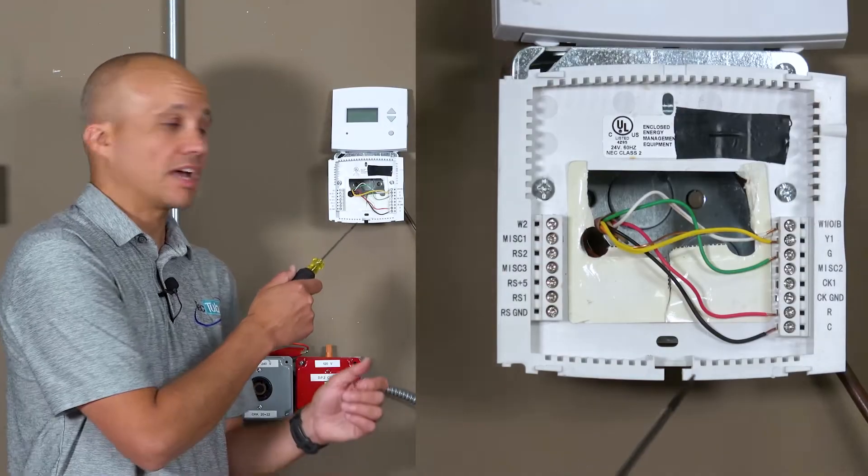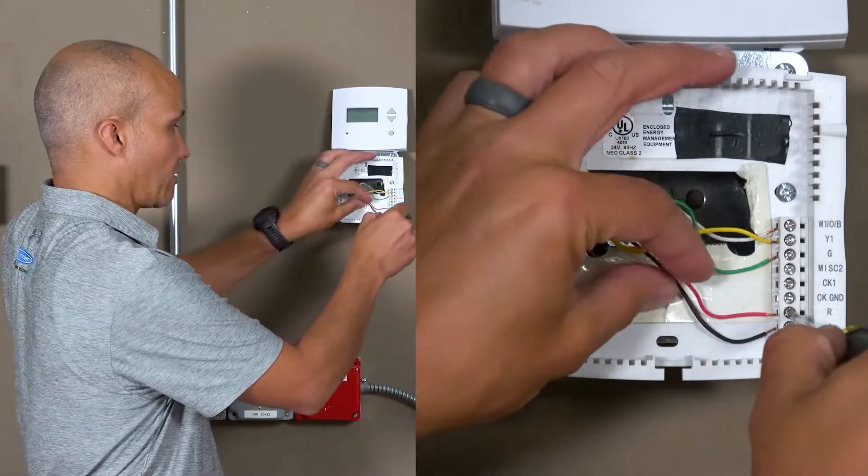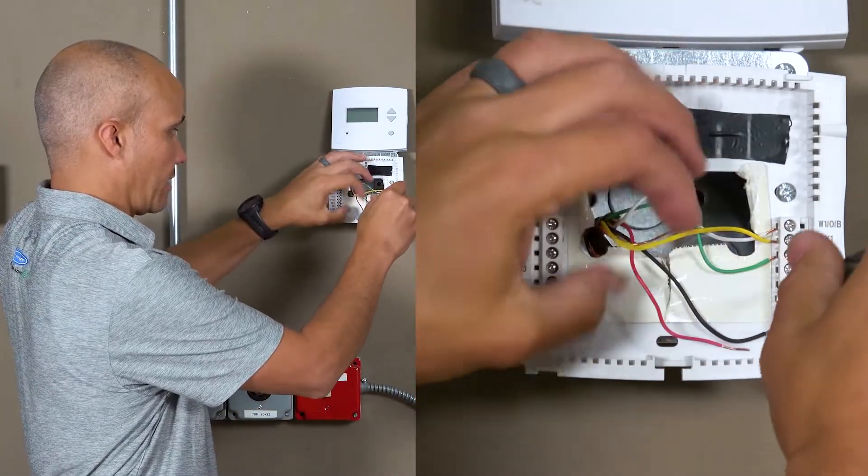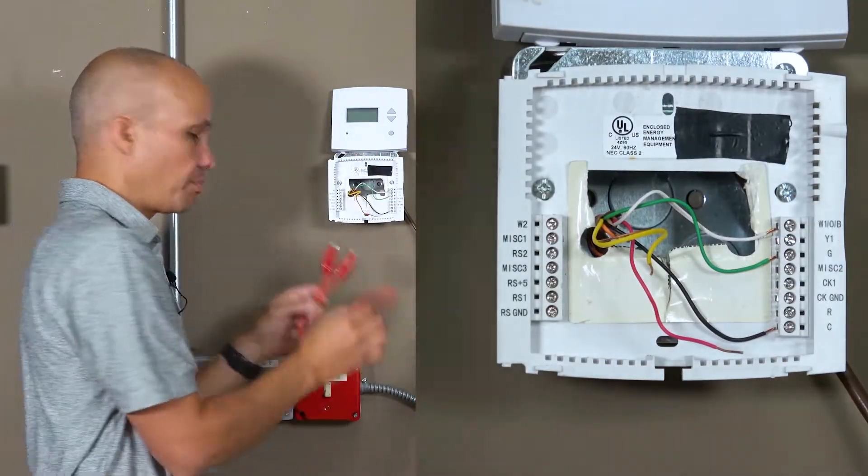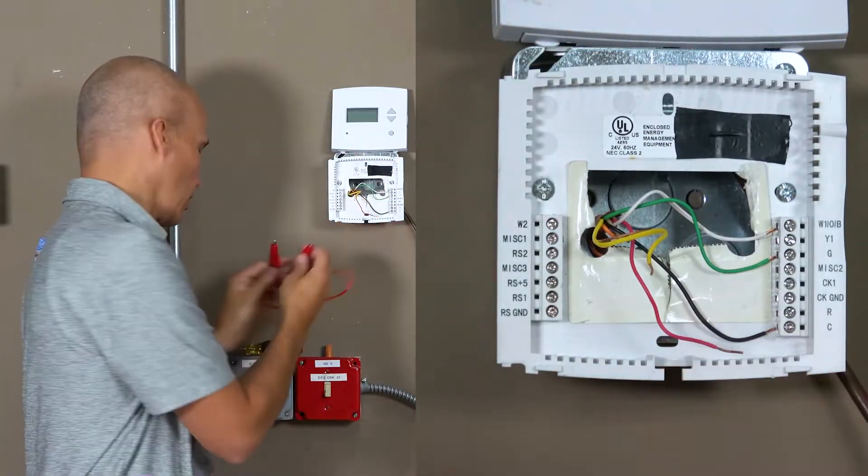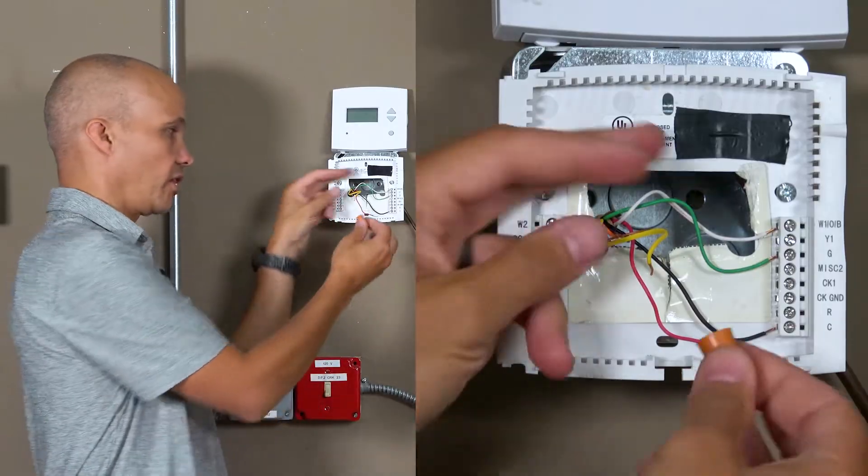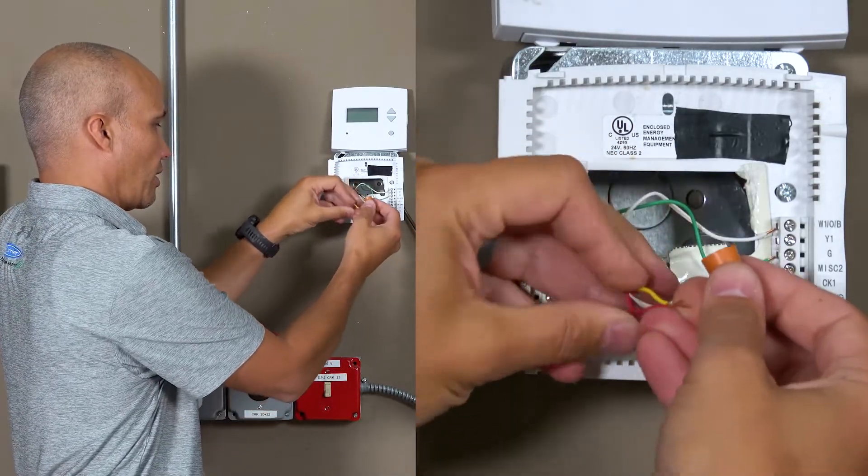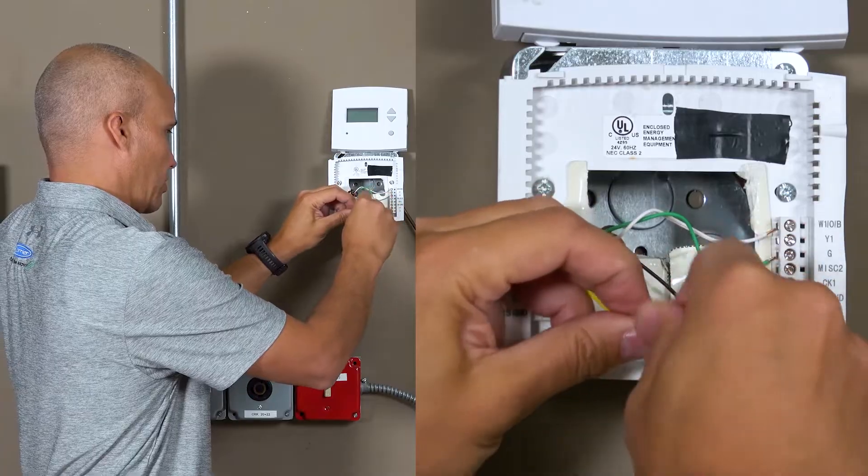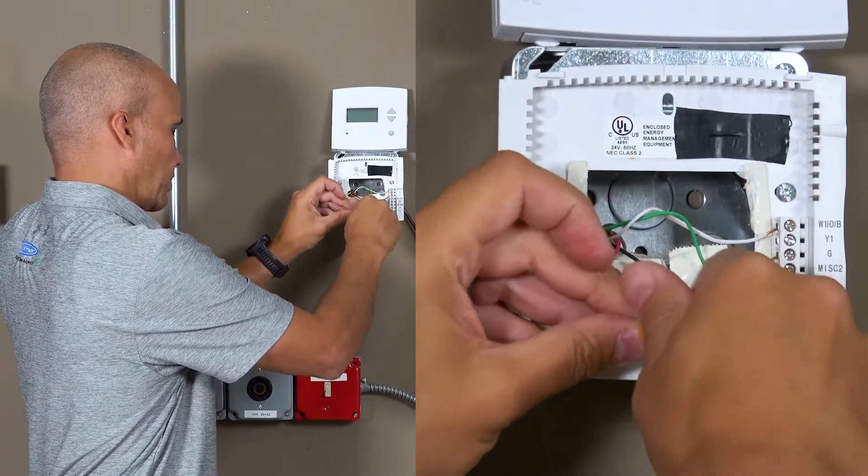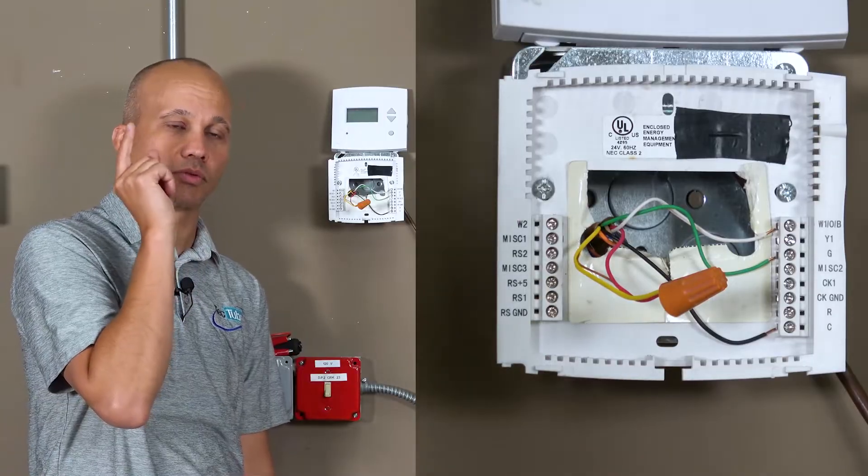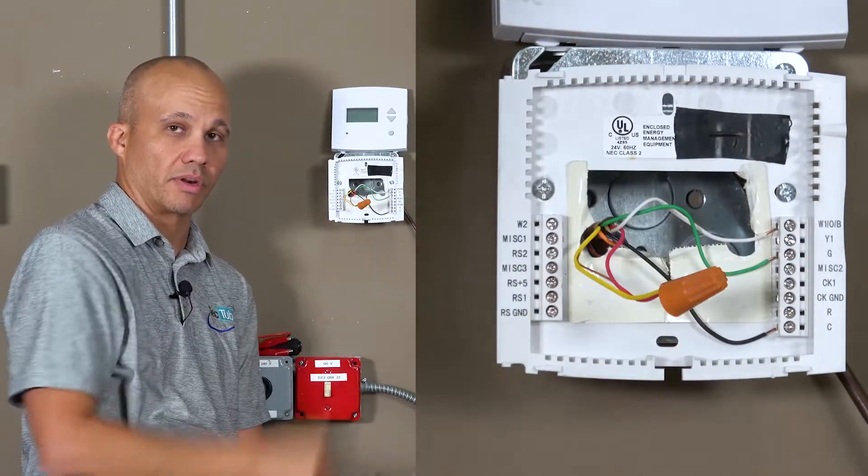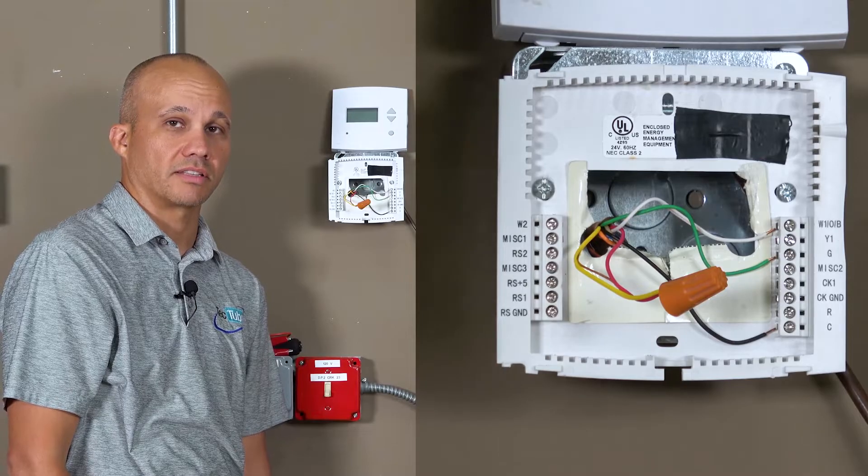We're down here at the thermostat. We're going to disconnect in this case the red wire and the yellow wire and then using our jumper we're going to connect the two of them together or if you prefer you can use a wire nut. So now the red and yellow wire are one continuous loop from the rooftop unit down to the stat and back to the rooftop unit. So let's go upstairs with our meter and test it.